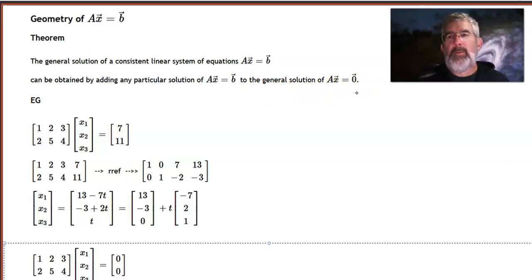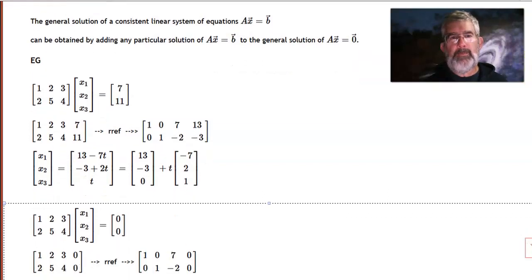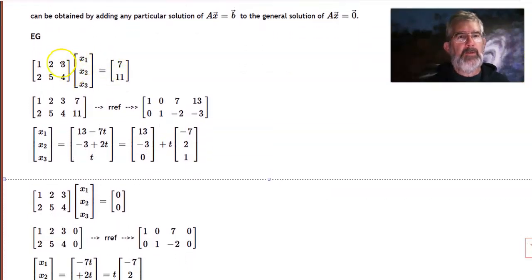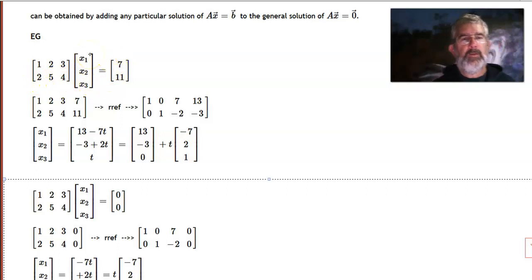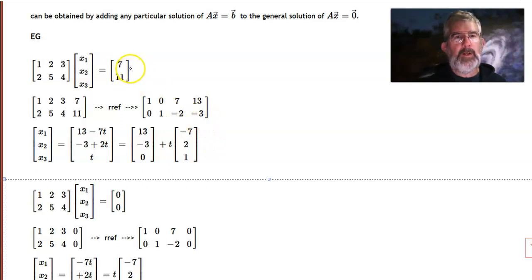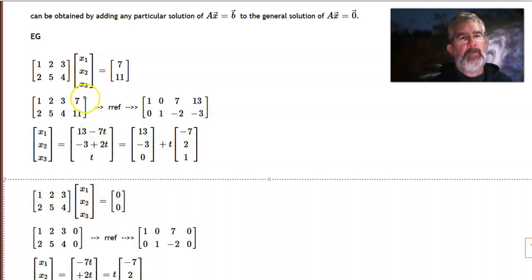I'm going to first do an example to show you how you can see it working, and then we'll give a proof as to why it always works. Here's my system of equations — two equations with three variables. The first equation is x1 plus 2x2 plus 3x3 equals 7, and the second equation is 2x1 plus 5x2 plus 4x3 equals 11. So there's my non-homogeneous system, because of the 7 and 11, and down here I'll do the same coefficient matrix but with zeros.